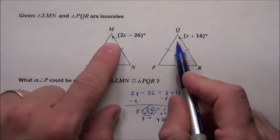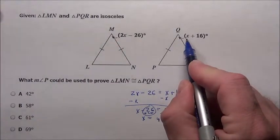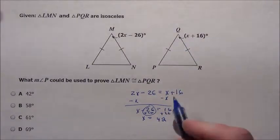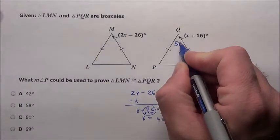Now x is 42, the angle is not 42, so you've got to be careful there. So if x is 42, let's plug 42 in, because this angle right here is x's value, which is 42 plus 16 more. 42 and 16 is 58.